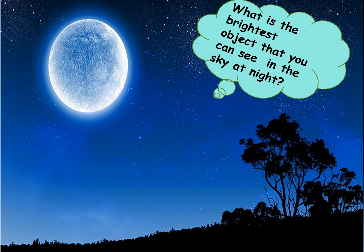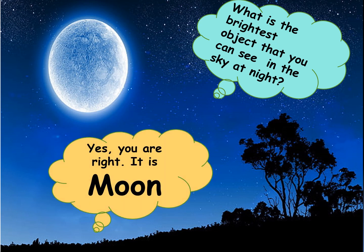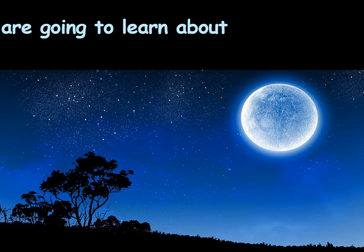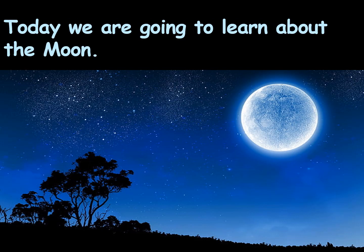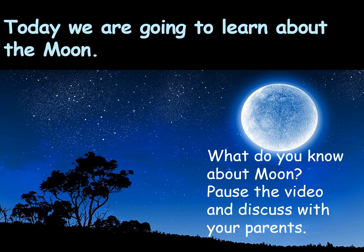Can you tell me children, what is the brightest object that you can see in the sky at night? Yes, you are right. It is moon. Today we are going to learn about the moon. What do you know about moon children? Pause the video and discuss with your parents.